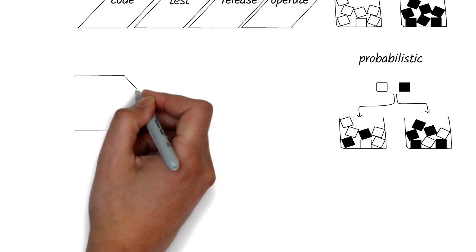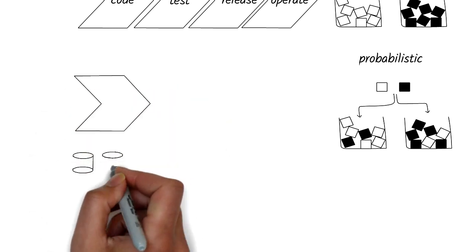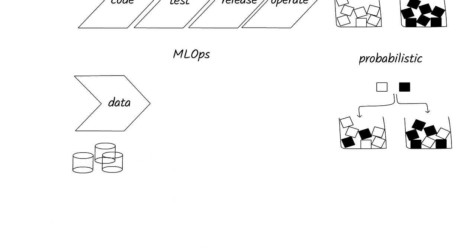So what should MLOps look like? First, we have to get a handle on the data that's required to build models. Many data scientists spend 80% of their time trying to locate, curate, and clean data before it can even be considered useful to build machine learning models. Instead, we need a pipeline that makes it easier for data scientists to explore the value contained within the data.